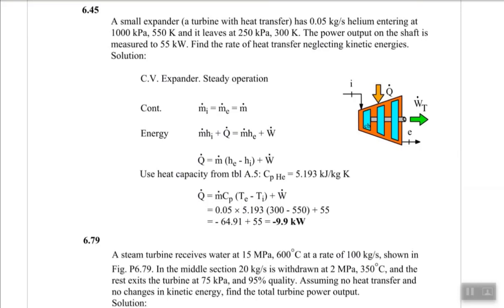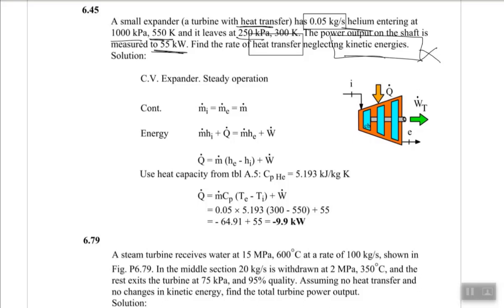Question 6.45: A small expander (turbine) with heat transfer has a mass flow rate of 0.5 kg/s of helium entering at 1000 kPa and 550 K, and leaving at 250 kPa and 300 K. The shaft power output is 55 kW. We need to find the rate of heat transfer, neglecting kinetic and potential energy changes.